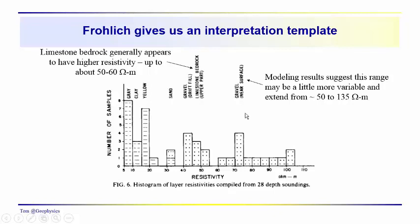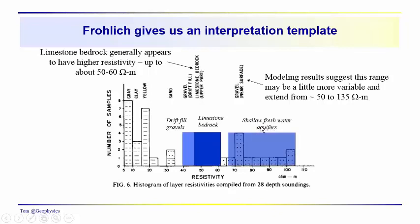We'll see that the limestone here sometimes is not distinct—we can't really be sure that it's there because of the influence of the brackish water reducing the resistivity. However, in some places it does have fairly high resistivity up into the 70s. We have these near surface aquifers which are higher resistivity, and they tend to be up in the 100 ohm meter range. So drift fill aquifers are in the 40 to 50 ohm meter range, the limestone is probably higher, and the shallow freshwater aquifers typically have higher resistivity around 100 ohm meters.